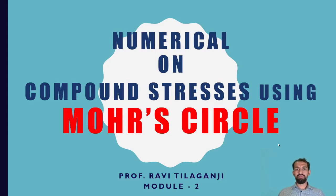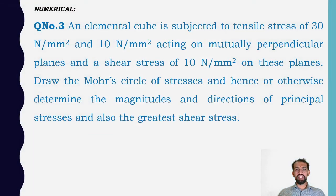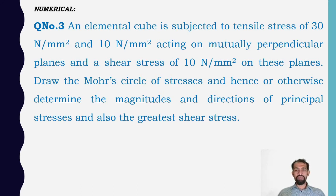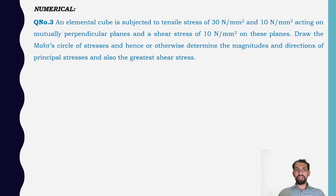Welcome to Strength of Materials. This video is related to a numerical on compound stresses using Mohr's circle. The numerical question is: an element cube is subjected to tensile stress of 30 N/mm² and 10 N/mm² acting on mutually perpendicular planes, and shear stresses of 10 N/mm² on these planes. Draw the Mohr circle of stresses and hence determine the magnitudes and directions of the principal stresses and the greatest shear stress.